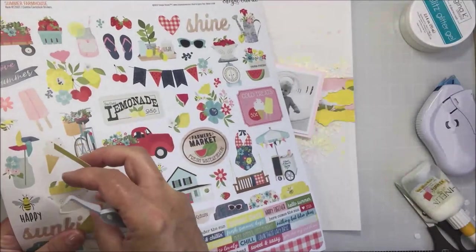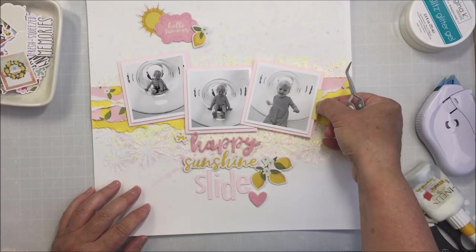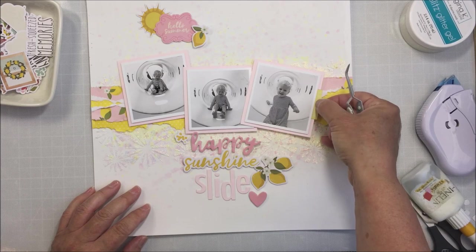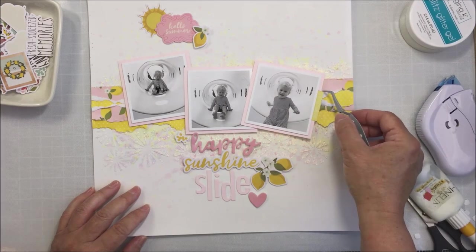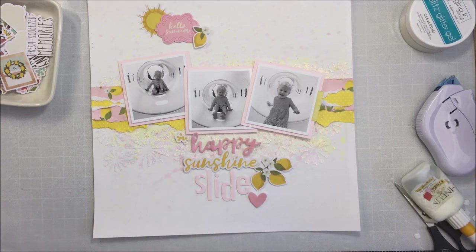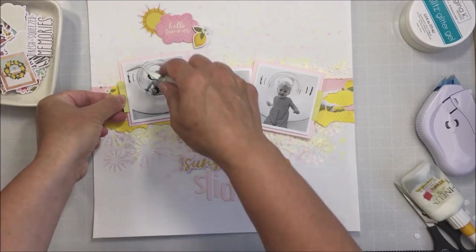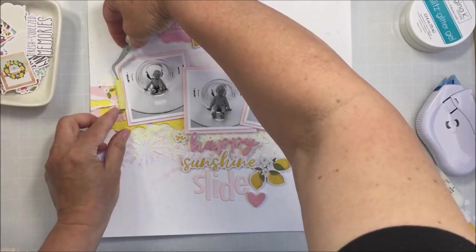Here you can see the 12 by 12 sticker sheet that comes in the kit and I'm just using that to embellish with. The word slide I just cut that out with some dies that I had in my stash to complete my title which says happy sunshine slide. I'm just using some of those phrase stickers from the sticker sheet to add to the side of each photo.